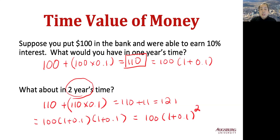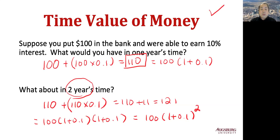We can recognize that $100 today will increase to $110 and $121 in one year and two years if the interest rate is 10%. This means that $100 today will be different from the value of $100 a year later, because today's $100 will change based on the interest rate. This is called the time value of money.